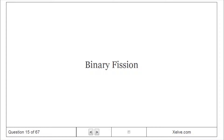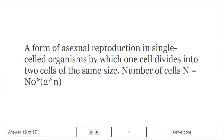Binary fission is a form of asexual reproduction in single-celled organisms by which one cell divides into two cells of the same size. The number of cells N equals N₀ × 2^n.